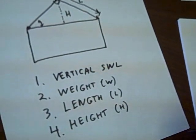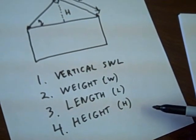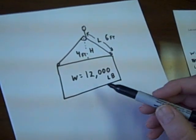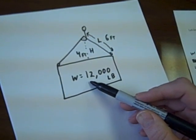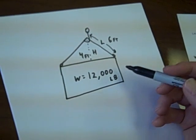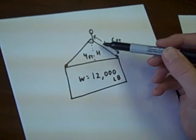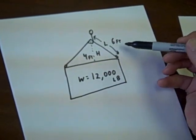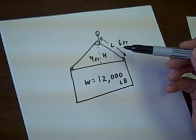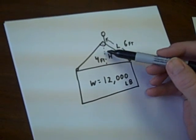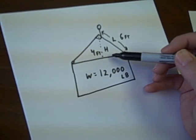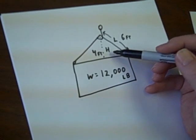So we'll put some real numbers onto this. Let's suppose that the load has a total weight of 12,000 pounds. We have two six foot straps, L, and the distance the hook is above the load is four feet, which is H.